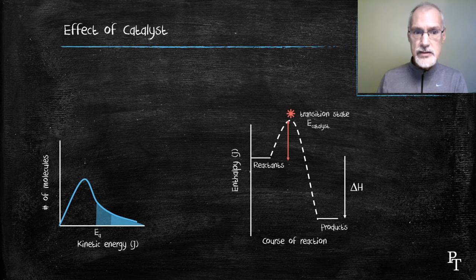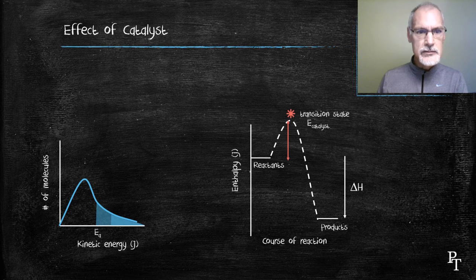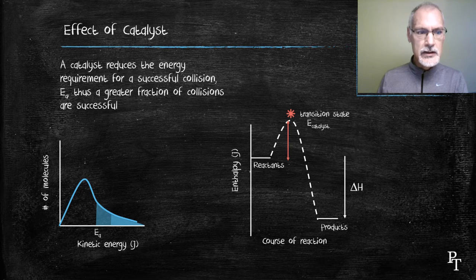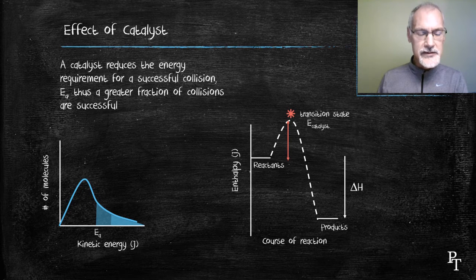But I'm not changing the shape of the distribution curve — all I'm doing is moving the activation energy to a lower or smaller number. So the catalyst reduces that energy requirement, creating a greater fraction of successful collisions.